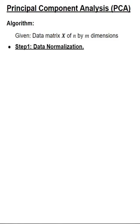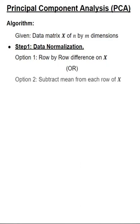There are multiple approaches for doing data normalization. One is a row-by-row difference, or you could subtract the mean from each row of X. Typically, option 1 is done in time series data, like financial time series, and option 2 is more popular in various other fields.